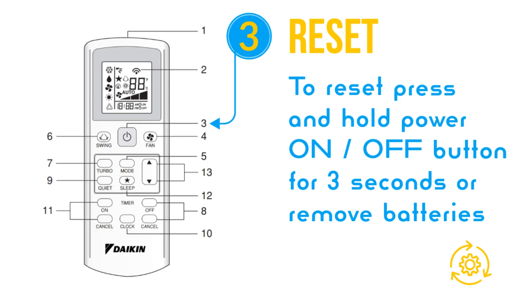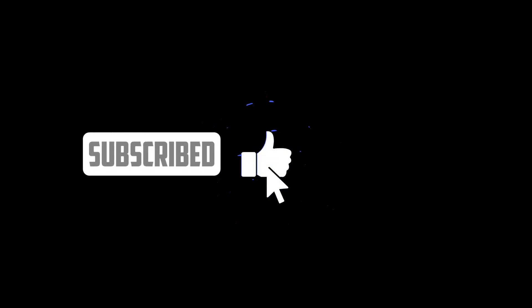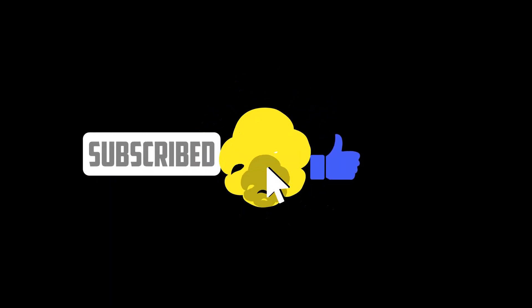To lock or unlock the Daikin AC remote, press and hold the temperature up and down buttons together. To lock or unlock the Daikin wall mount, press and hold the enter button. Read more about Daikin AC remote settings and functions on acguide.pk. Let me know in the comments if you are satisfied with Daikin air conditioner performance.